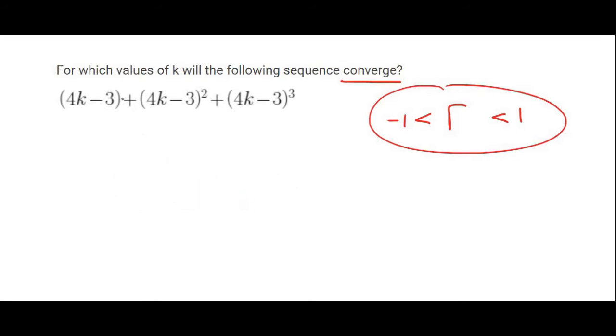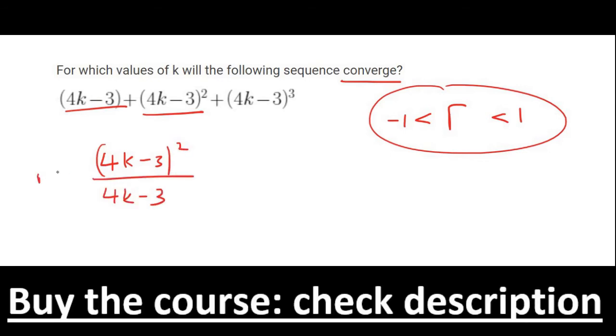So a nice way to get R is to always say T2 over T1. So we can say 4K minus 3 squared over 4K minus 3, and this would be equal to R.